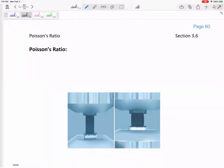So the ratio—let's get a good definition. Poisson's ratio is the ratio of latitudinal strain to longitudinal strain.